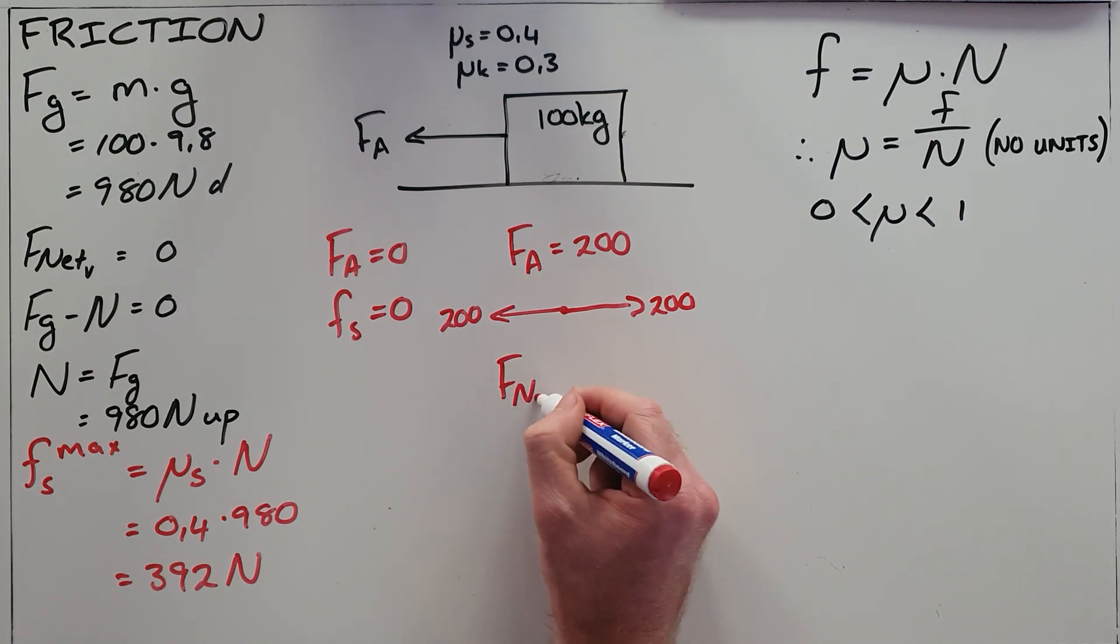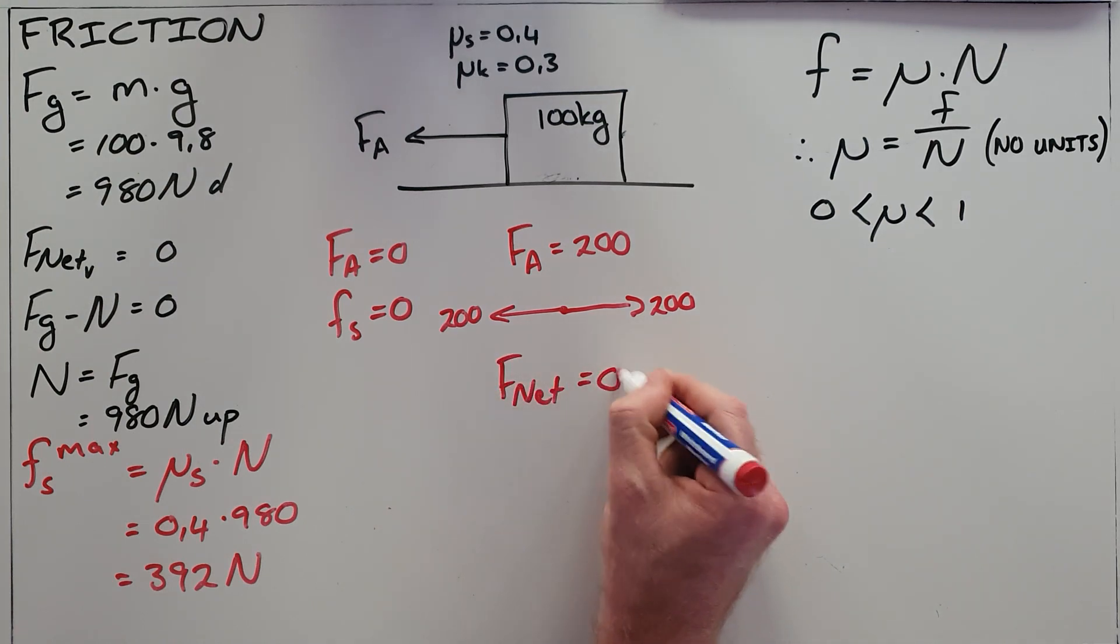The result is that the net force on this object is zero and the object does not move, and it is therefore opposed motion once again.